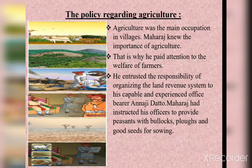The policy regarding agriculture: agriculture was the main occupation in villages. Maharaj knew the importance of agriculture, that is why he paid attention to the welfare of farmers. He encouraged peasants — meaning poor farmers — to bring uncultivated land under cultivation. If a crop was lost due to excessive rain, drought, or enemy destruction, Maharaj cancelled the debt and land revenue.